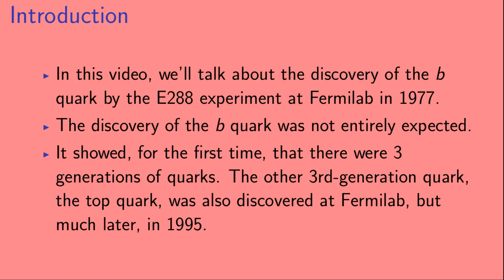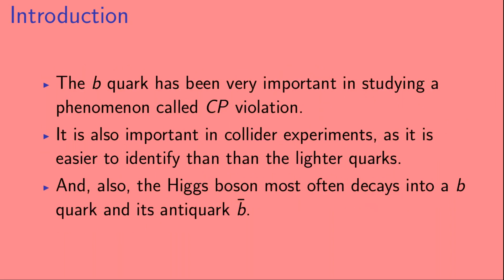The other third-generation quark, the top quark, was also discovered at Fermilab, but much later, in 1995. The B quark has been very important in studying a phenomenon called CP violation. It is also important in collider experiments, as it is easier to identify than the lighter quarks, and the Higgs boson most often decays into a B quark and its anti-quark, which we denote as B with a bar over it.